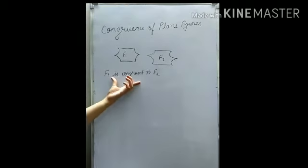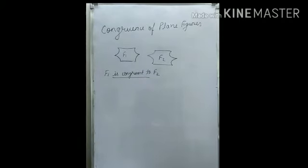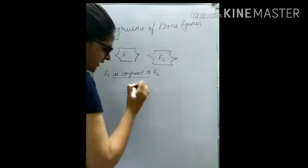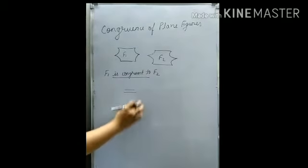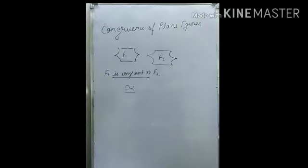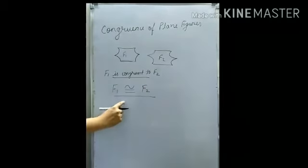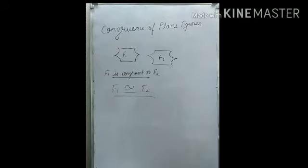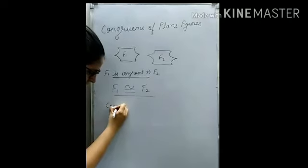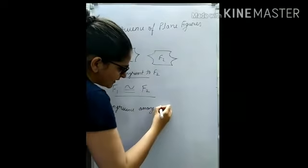Now this congruency has a sign — a symbol — because this word is so difficult to write. The sign is like an equal sign but with a wave or tilde on top, like a letter S shape. So if I read it, I will say F1 is congruent to F2. Next topic is we will study about congruency among line segments.